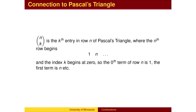The reason it is called the binomial coefficient is its connection to Pascal's triangle, which, among other things, determines the coefficients in the expansion of the binomial x plus y to the n power. n choose k is the kth entry in row n of Pascal's triangle, where the nth row begins 1, then n, and the value for k begins at 0 and proceeds to the right, so that when k equals 0, n choose k is 1; when k is 1, n choose k is n, and so on.